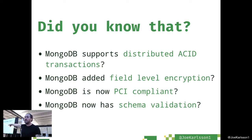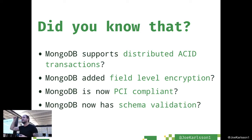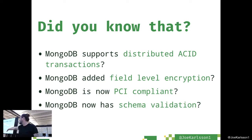As of version 4.2, MongoDB now supports distributed ACID transactions, so if you have a sharded database you can perform ACID-compliant transactions on those data models. It now supports field-level encryption — you can encrypt your entire database or specific fields within it. As of recently, MongoDB is now PCI compliant, meaning you can save personally identifiable information in a MongoDB database. Schema validation is also supported.